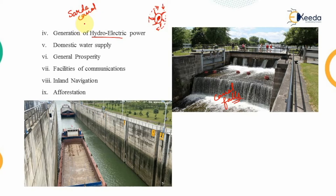The next advantage is domestic water supply. Since we are ensuring the supply of irrigation water, that water can be rerouted to households to cater to domestic water demand. The next advantage is general prosperity — increased food production improves the livelihood of the 70% of the population that is dependent on agriculture.